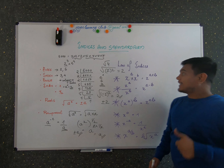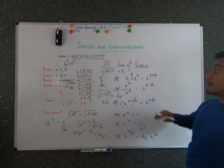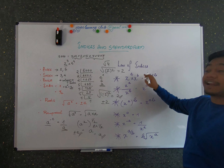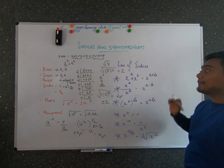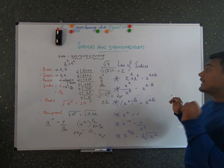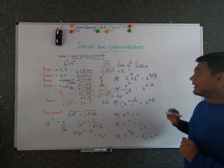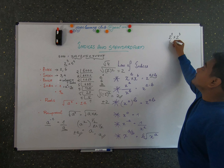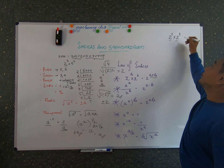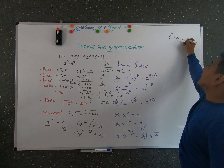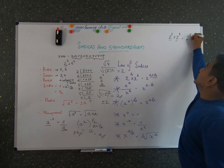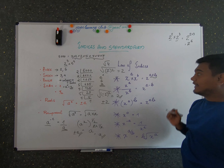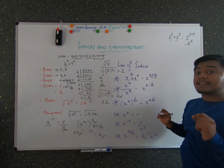There are six laws of indices. The first law: when two numbers have the same base — for example x raised to a and x raised to b — their index values are added. So 2 squared times 2 cubed equals 2 raised to the power of 5, because the base numbers are the same and we add the indices.